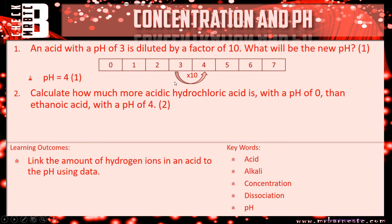Question two, calculate how much more acidic hydrochloric acid is with a pH of 0 than ethanoic acid with a pH of 4. So again, draw this out. You're starting off with a pH of 0, and you're going up to a pH of 4.